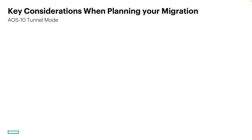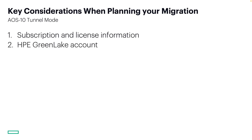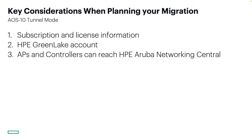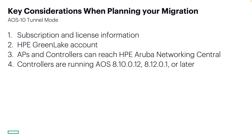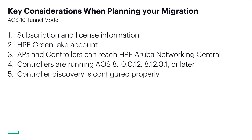Now here are some key considerations for migration. Some of these may be obvious. Gather your subscription and license information from your customer. Make sure the customer's HPE GreenLake account has been created. Verify APs and controllers can all reach Central — this is specifically for customers who have security policies in place preventing APs and controller appliances from reaching the internet. To convert controller-managed APs, the associated controller should be running AOS 8.10.0.12, 8.12.0.1 or later before beginning an upgrade. Make sure AP controller discovery is configured properly — for example, if APs are configured with static LMS IP, make sure the AP system profile is pointing the APs to the cluster's VRRP address and not an individual MC.